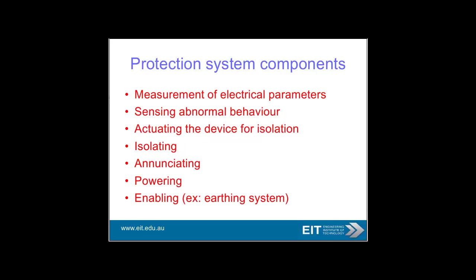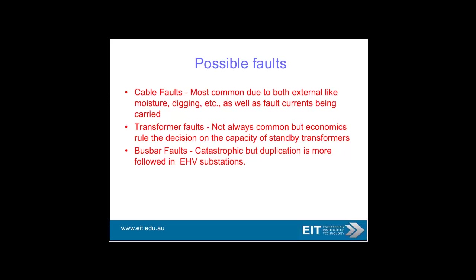Typical components of a power system protection include: measurement of electrical parameters, sensing abnormal behavior, actuating device isolation, isolating, annunciating to everyone, powering, and enabling. Possible faults range from cable faults — especially on old cables — transformer faults, Buchholz relay, and busbar faults. At extra high voltage substations, busbar faults can be quite traumatic.